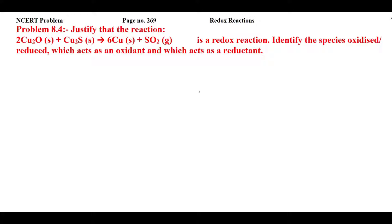So here we are having a reaction: 2 cupric oxide plus copper sulfide gives rise to copper in its elemental state plus sulfur dioxide, and we have to prove that this is a redox reaction. Let's see what a redox reaction actually is.